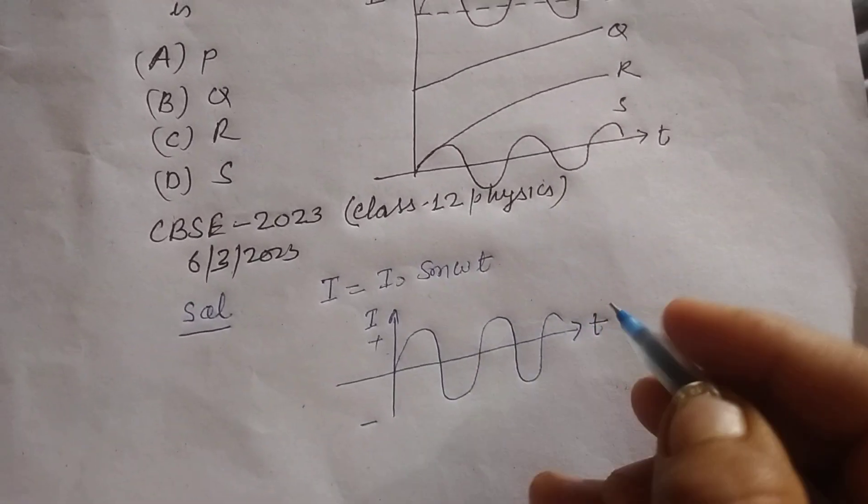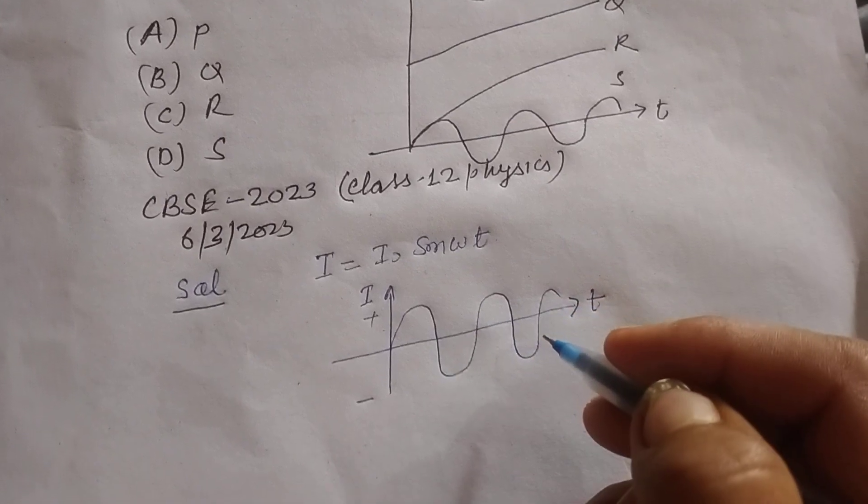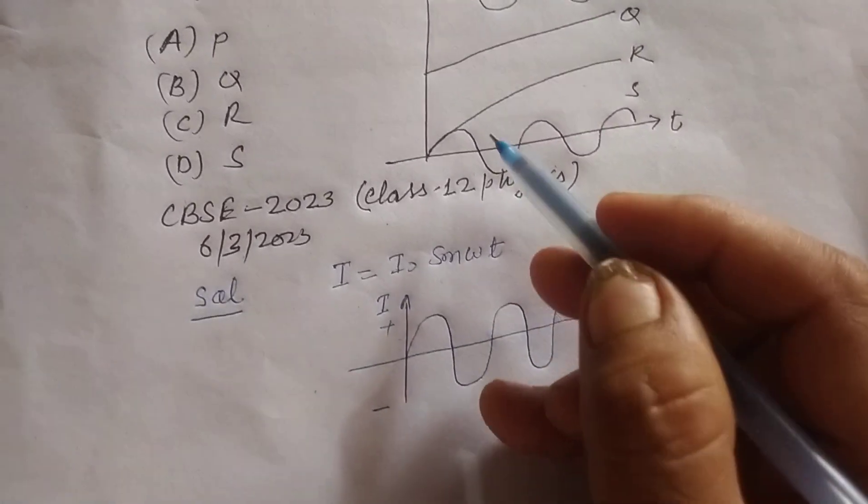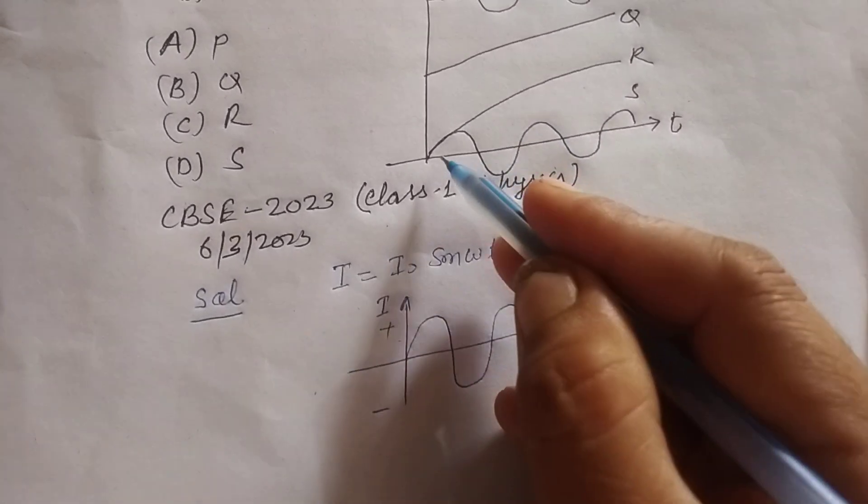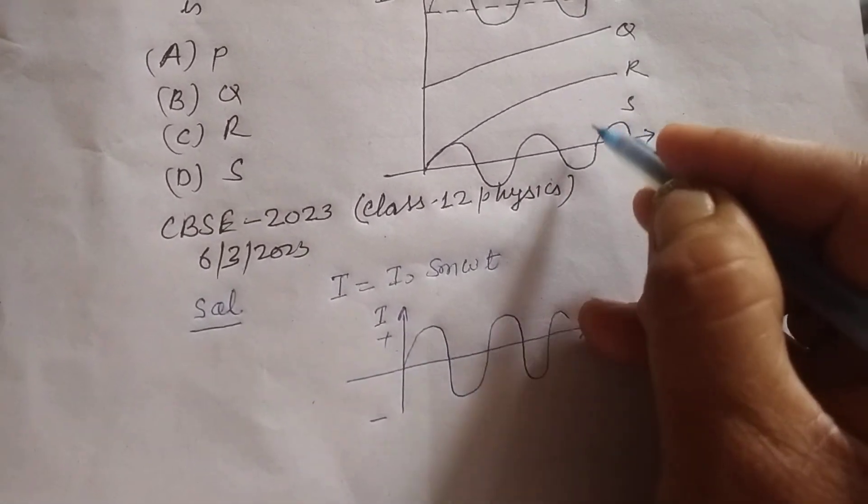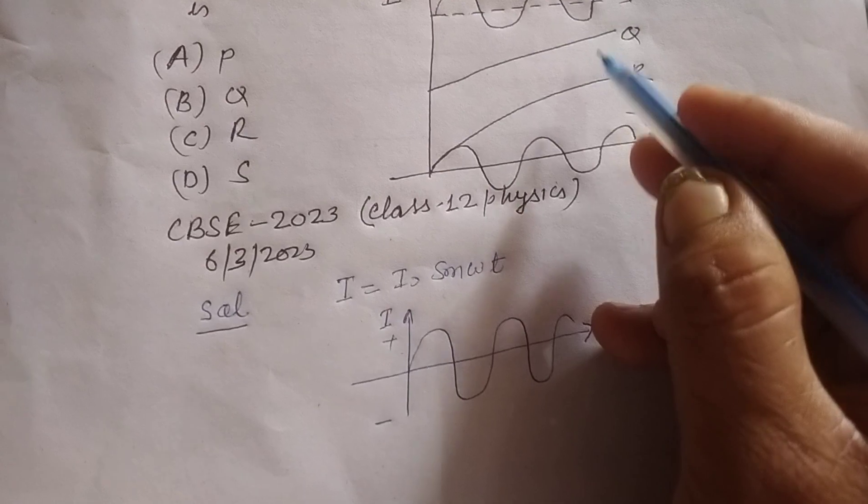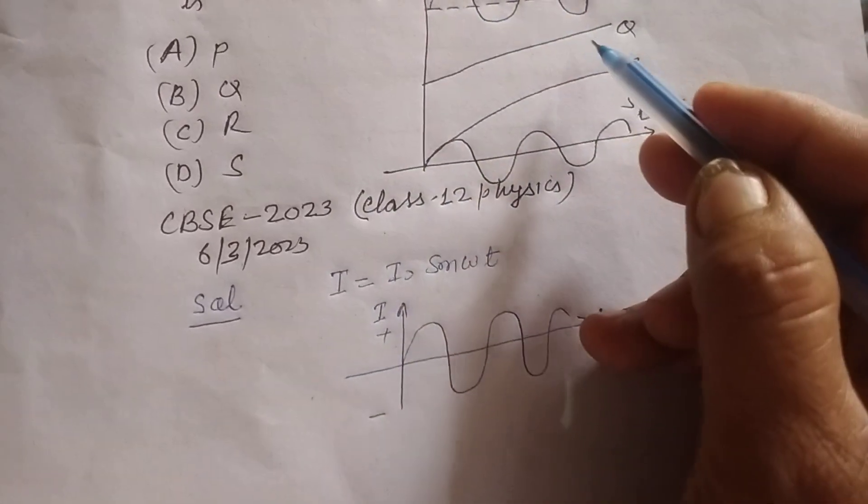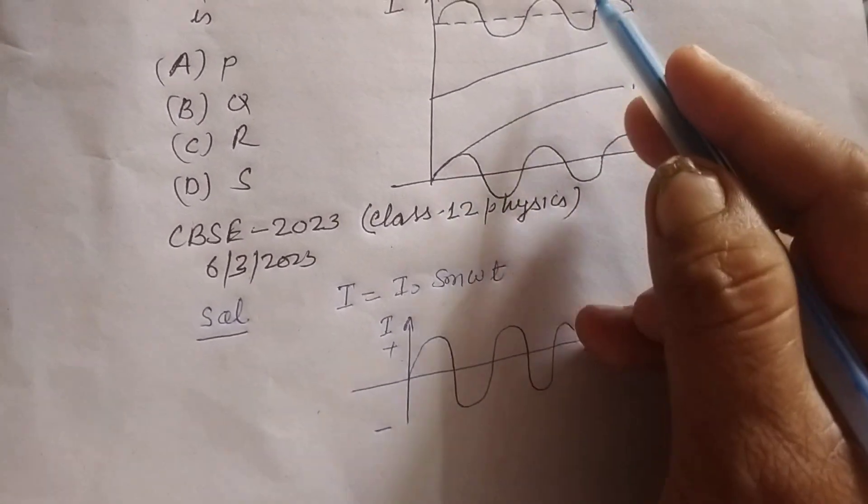So this is the main graph of alternating current, which is found in the given graph of the devices. This is device S because there is breakage in the time axis.